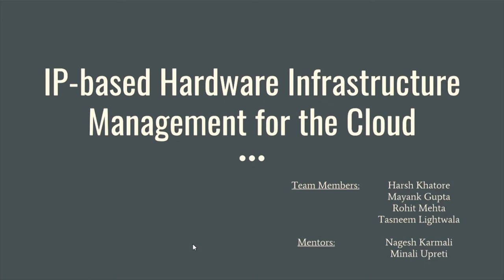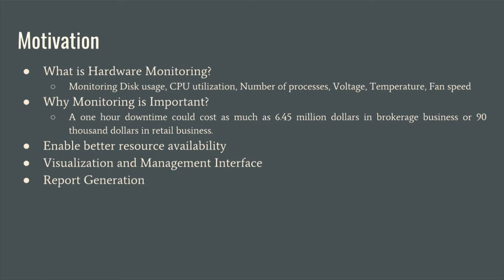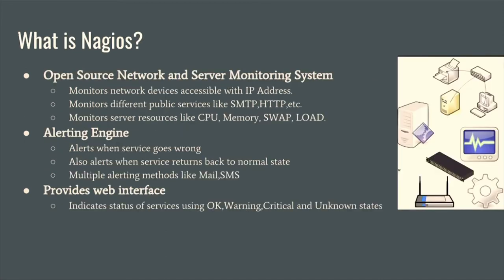The main objective of our project is to monitor servers on the hardware level. We have used Nagios for the monitoring purpose. Nagios is an open source network and server monitoring system. It easily accesses public services like HTTP, SNMP, and also monitors server resources like CPU and memory. It gives you notifications whenever a problem occurs, and also alerts you when the problem is solved. You can be notified by email or SMS notifications.